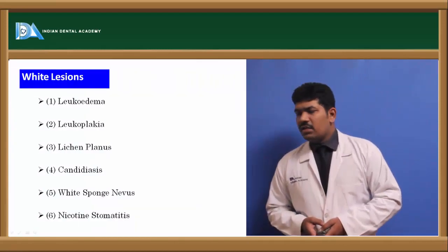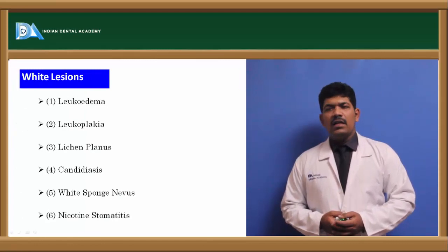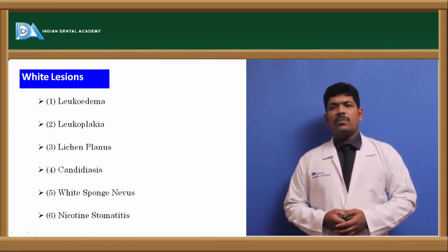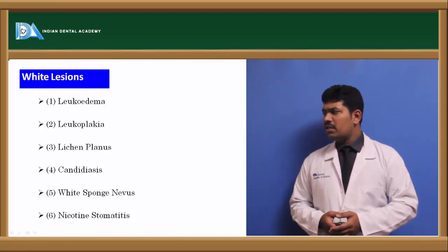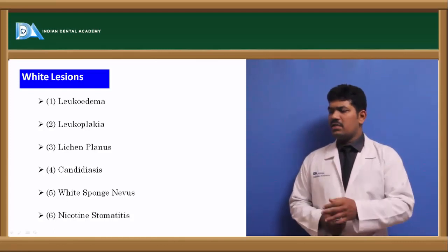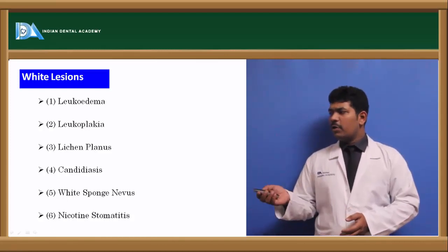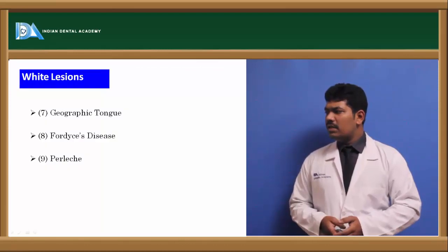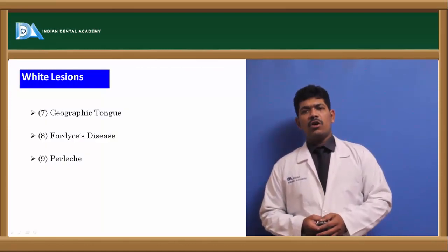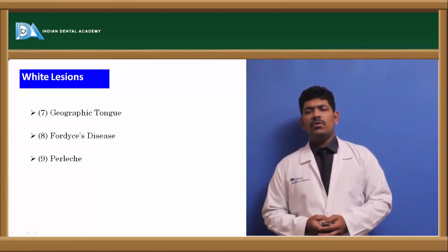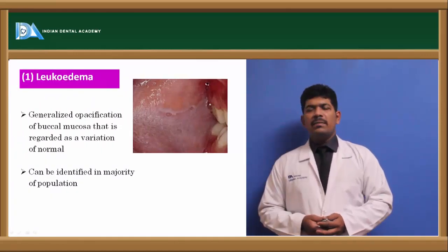In white lesions, the most common lesions have been listed here and we will be talking about each and every lesion in detail. Starting with leukoedema and leukoplakia, these are the most common types of white lesions which are commonly found in the oral mucosa. The first among them is leukoedema.